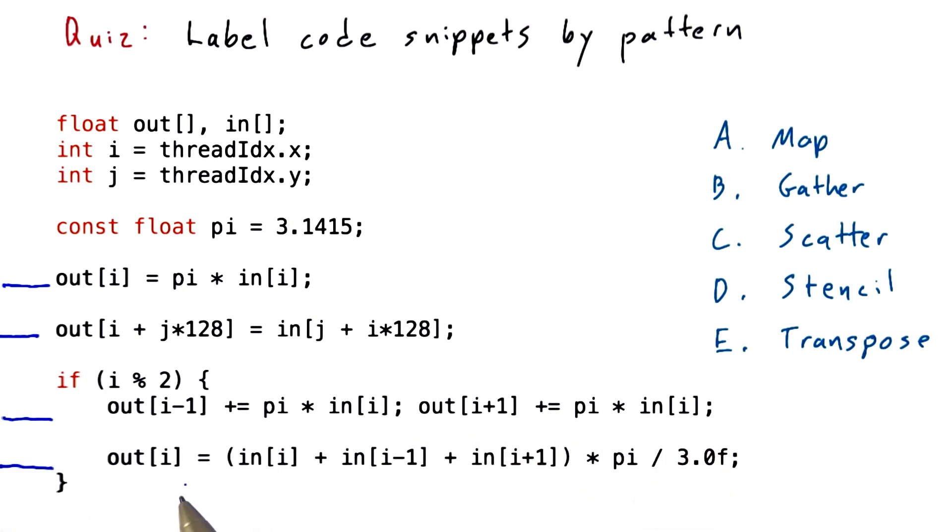Finally, out[i] equals in[i] plus in[i-1] plus in[i+1] times pi divided by 3.